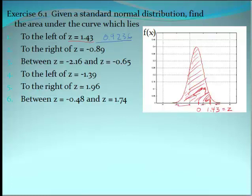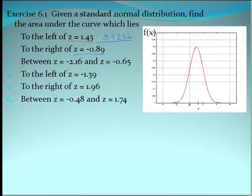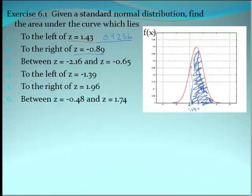Now we're going to look for the area to the right of z = −0.89. So if this is 0, then minus 0.89 will be right around here to the left of center, and we want everything to the right of that. You can see it's going to be bigger than one half — maybe not hugely bigger, but kind of bigger.